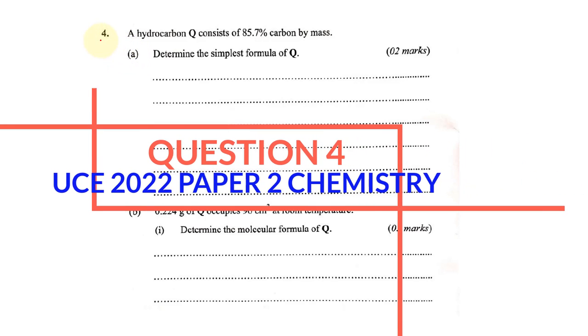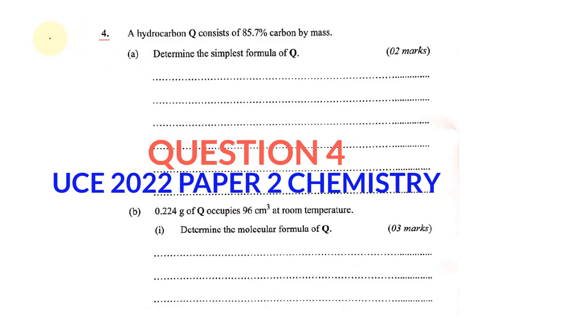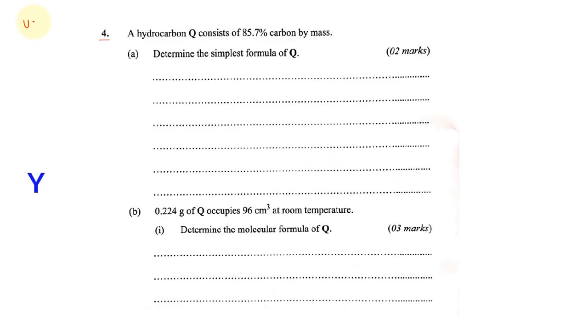Hello and welcome to question 4 of our UCE chemistry paper 2, 2022. A hydrocarbon Q consists of 85.7% carbon by mass. We want to determine the simplest formula of Q.